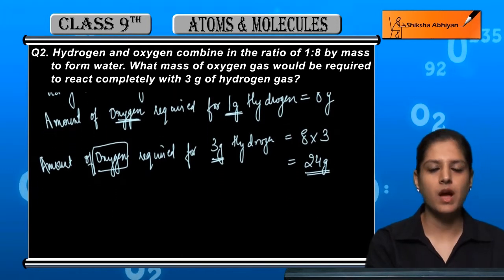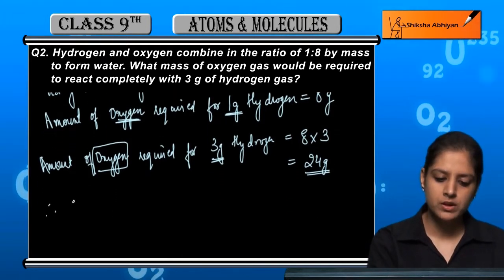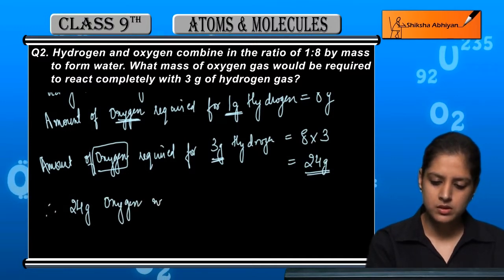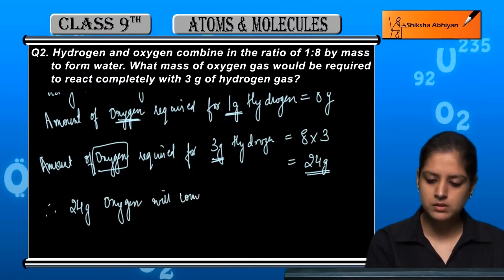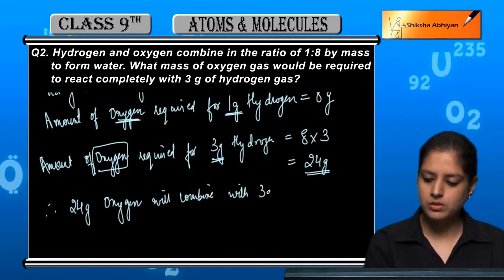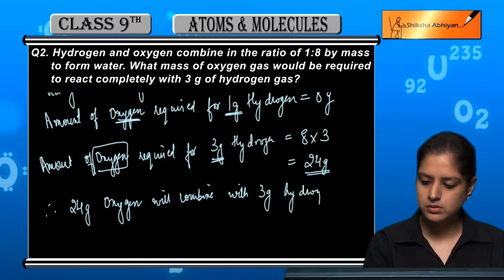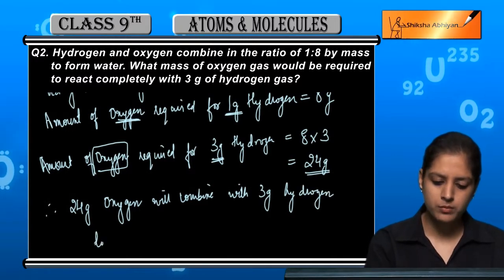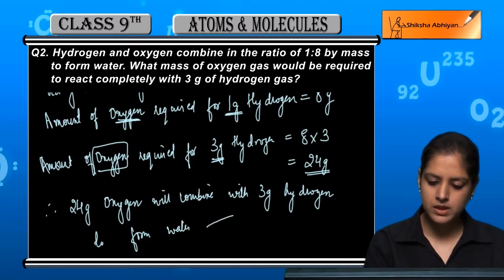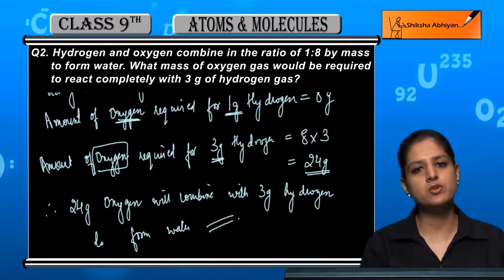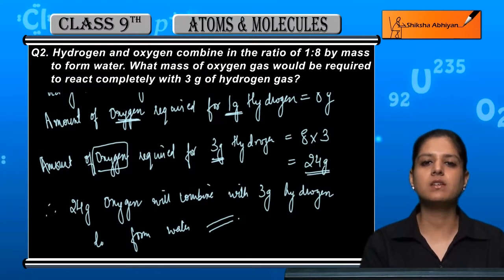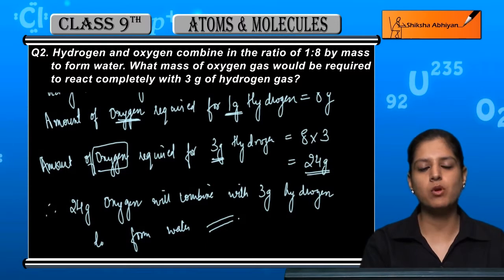Therefore 24 gram oxygen will combine with 3 gram hydrogen to form water. It's a proportion, 1 is to 8. When we use 3 gram hydrogen, we use 8 times, which means 24 grams of oxygen.